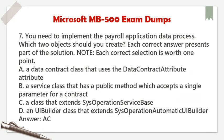Question 7. You need to implement the payroll application data process. Which two objects should you create? Each correct answer presents part of the solution. A. A data contract class that uses the data contract attribute. B. A service class that has a public method which accepts a single parameter for a contract. C. A class that extends SysOperationServiceBase. D. A UI builder class that extends SysOperationAutomaticUIBuilder. Answer: A, C.